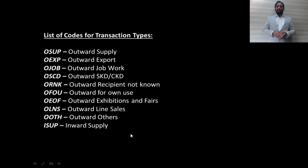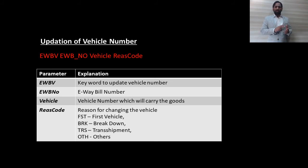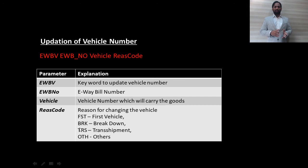After an e-way bill has been generated, if you want to update the vehicle number, you are supposed to send an SMS as EWBV, followed by the e-way bill number, the vehicle number, and the reason. The reason is a code — the codes are shown on your screen and cover scenarios such as first-time transport, breakdown of the vehicle, and so on.